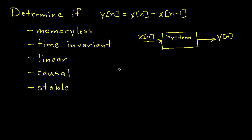To determine whether or not the system is memoryless, a system is memoryless if the output at time n depends on the input only at time n. Looking at the equation that defines the system, the output at time n depends on the input at time n and on the previous input — the input at time n minus 1. So the system is not memoryless.